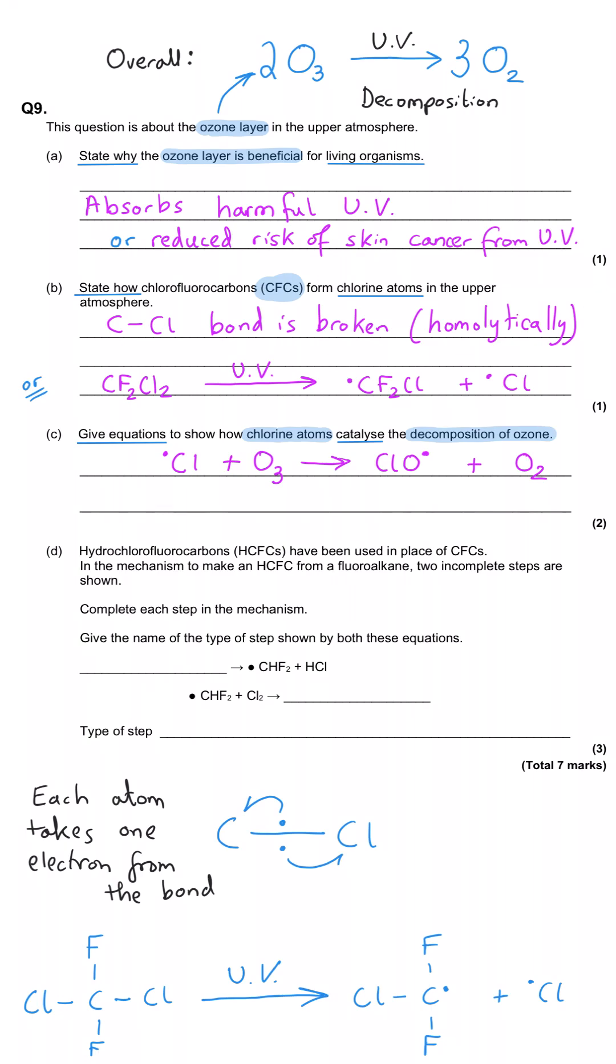And then the ClO free radical will react with more ozone and turn into chlorine free radicals and yet more oxygen, this time two oxygen. And these are the two equations we need to state for our marks.